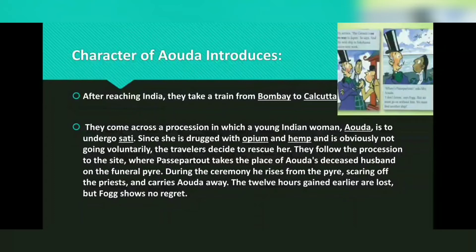They come across a procession in which a young Indian woman, Aouda, is to undergo sati. Since she is trapped with opium and hemp and is obviously not going voluntarily, the travelers decide to rescue her. They follow the procession to the site where Passepartout takes the place of Aouda's deceased husband on the funeral pyre. During the ceremony he rises from the pyre, scaring off the priests, and carries Aouda away. The 12 hours gained earlier are lost, but Fogg shows no regret.